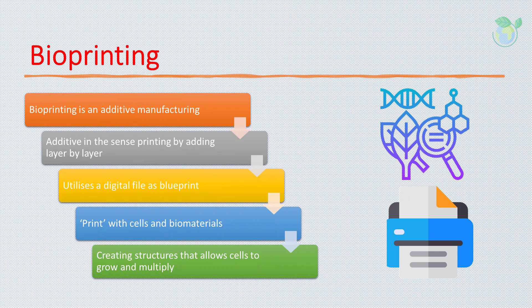Bioprinting technology has emerged as a powerful tool for building tissue and organ structures in the field of tissue engineering. It is an additive manufacturing technique as it prints or adds layer by layer. The printers interpret instructions from a digital file as the blueprint and proceed to allow precise placement of cells, biomaterials, and biomolecules in spatially predefined locations within confined three-dimensional structures. We introduce the general principles and limitations of the most widely used bioprinting technologies, including jetting and extrusion-based systems.